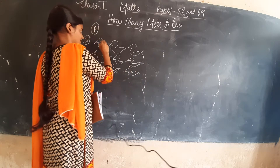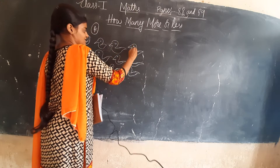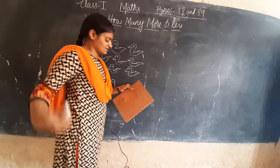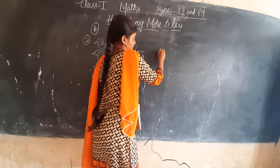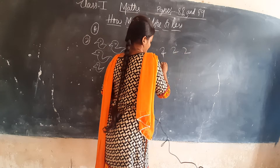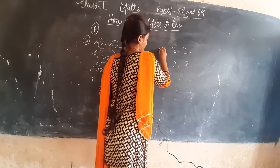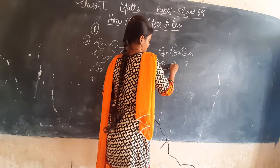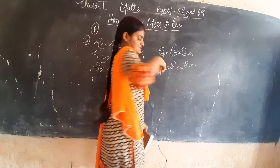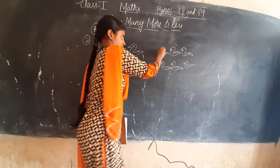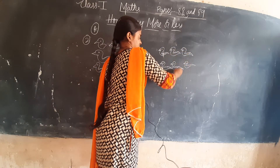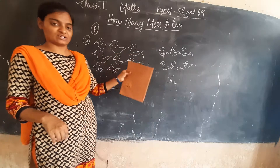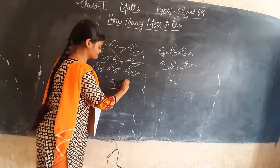Total how many birds are there? 9 birds are there. In the second column, how many birds are there? 6 birds — 1, 2, 3, 4, 5, 6 — 6 birds they have given. Which column has more birds? First column or second column? First column — first column has 9 birds, so tick beside 9.